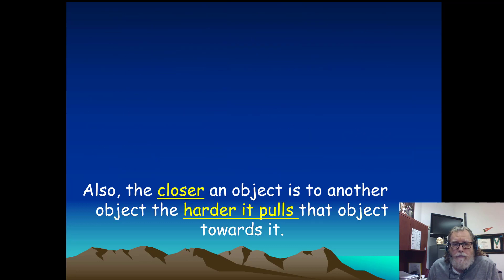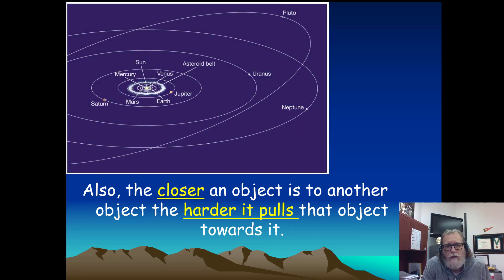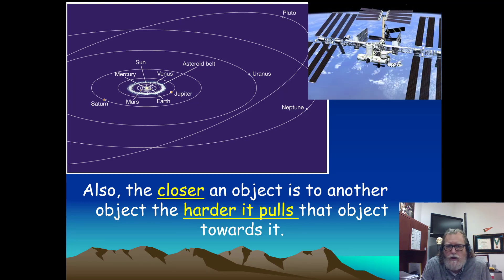Now, the closer an object is to another object, the harder it will actually pull that object towards it. So Mercury, which is very close to the Sun, is going to experience a much greater gravitational pull from the Sun than, say, Neptune, because Neptune is so far away. And we refer to that as proximity.